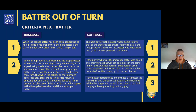For softball, there are three criteria to determine the next batter. Number one: the next batter is the player whose name follows that of the player called out for failing to bat. If the next player was the incorrect batter who was called out, go to the next person in the lineup. Number two: if the player who was the improper batter was called out, their turn at bat will not take place in the same inning until all other batters in the batting order have completed their turn at bat; if that turn at bat occurs before this, go to the next batter. Number three: if the batter declared out under these circumstances is the third out, the correct batter in the next inning will be the player who would have come to bat had the player been put out by an ordinary play. Let me show you some examples to explain the different scenarios.